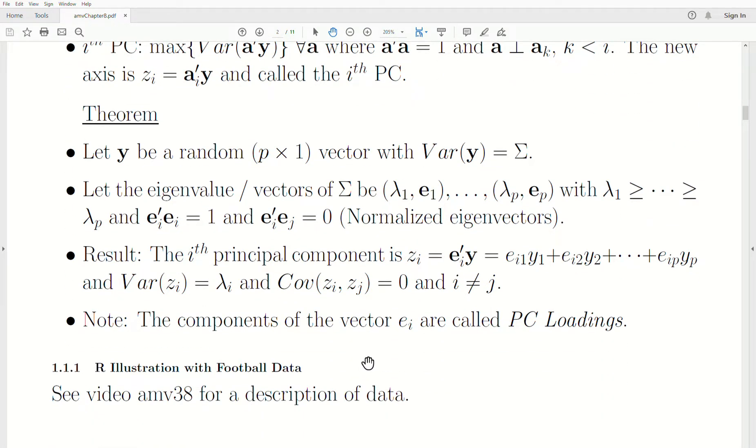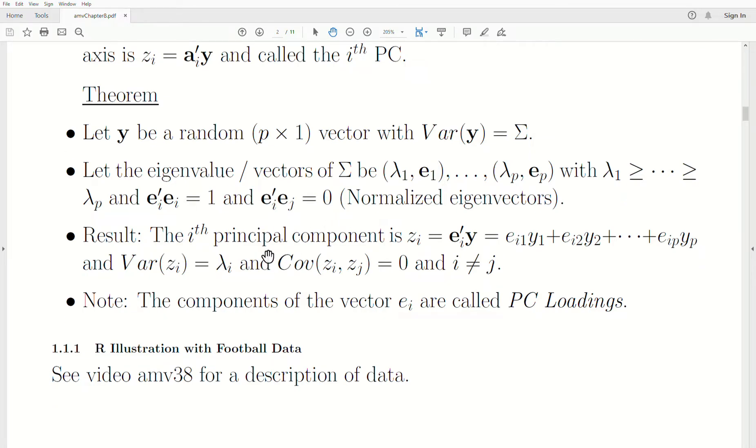Here's a theorem on how to calculate those principal components. Let y be a random (p × 1) vector with variance-covariance matrix Σ. Let the eigenvalue-eigenvector pairs of Σ be (λ1, e1), (λ2, e2), ..., (λp, ep) with λ1 ≥ λ2 ≥ ... ≥ λp, where λi are ordered from largest to smallest. These eigenvectors are normalized, meaning e'iei = 1, and e'iej = 0 for i ≠ j, so they're all perpendicular to each other.